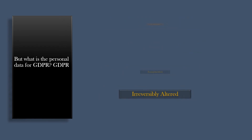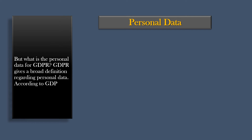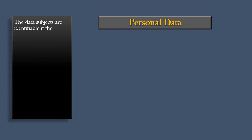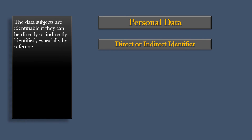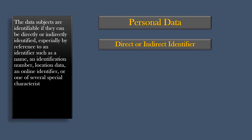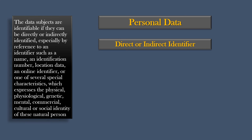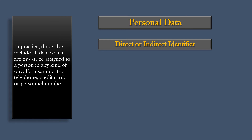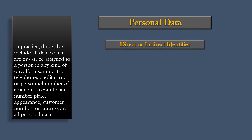But what is personal data for GDPR? GDPR gives a broad definition regarding personal data. According to GDPR, personal data is any information that is related to an identified or identifiable natural person. The data subjects are identifiable if they can be directly or indirectly identified, especially by reference to an identifier such as a name, an identification number, location data, an online identifier, or one of several special characteristics which express the physical, physiological, genetic, mental, commercial, cultural, or social identity of these natural persons. In practice, these also include all data which are or can be assigned to a person in any kind of way — for example, telephone, credit card, or personnel number of a person, account data, number plate, appearance, customer number, or address.